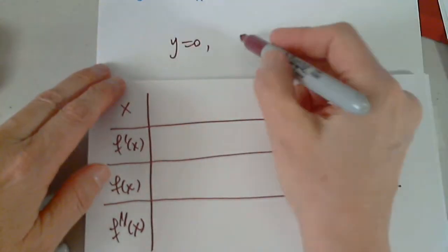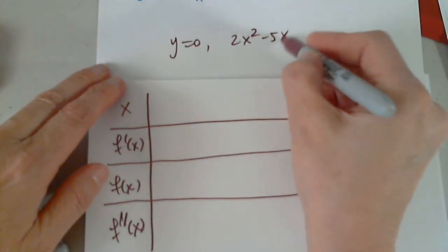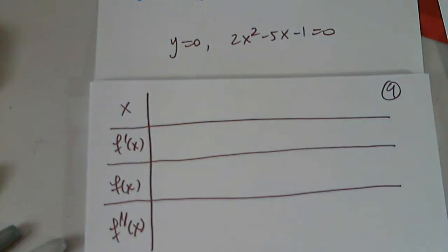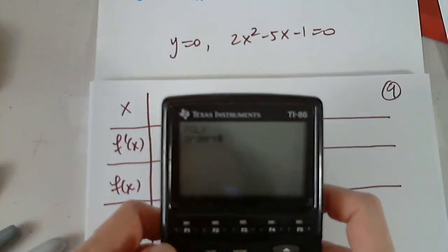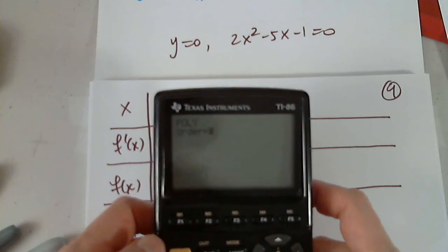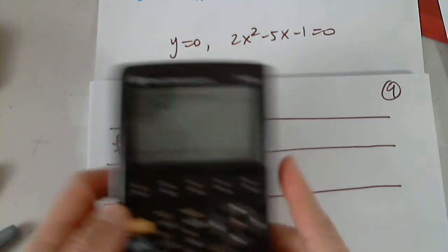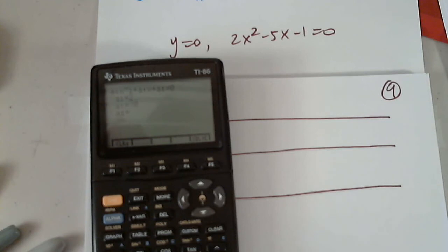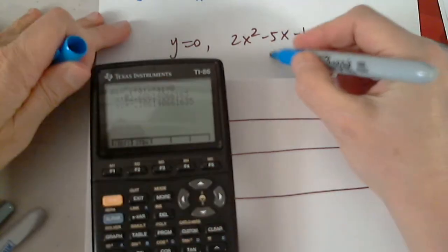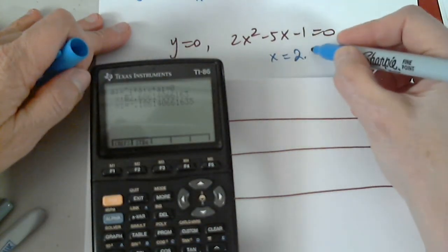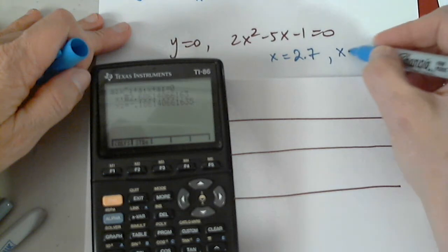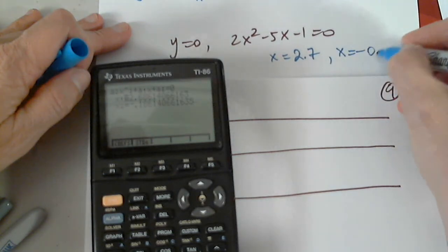When y equals 0, we know that 2x squared minus 5x minus 1 is 0. I'm going to use my 20 plus year old calculator for that. It has degree 2, and I have 2, negative 5, negative 1, and solve. So I got x equals, for the x-intercepts, 2.7 and x equals negative 0.2.